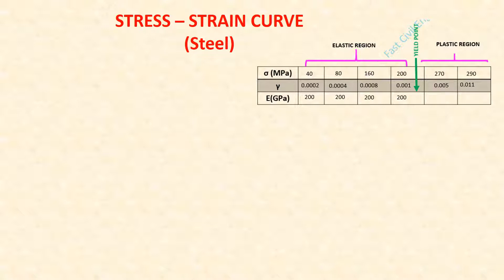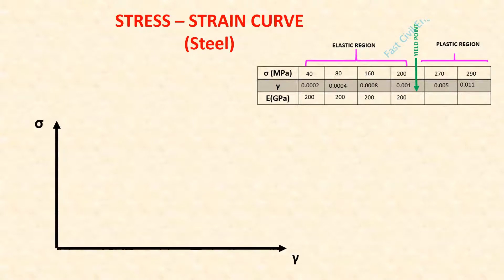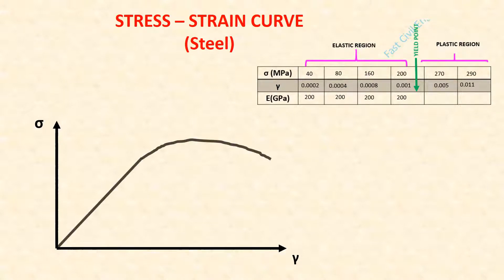Now draw the stress vs. strain curve. The Y axis represents stress (sigma) and the X axis represents strain (gamma). The curve has a characteristic shape, and this point is the yield point.